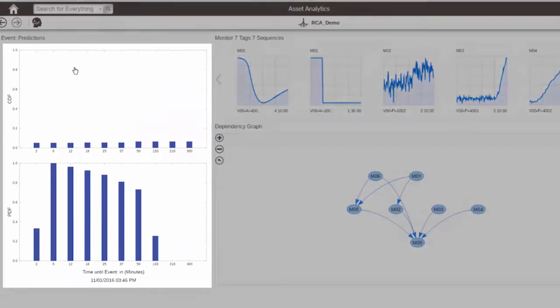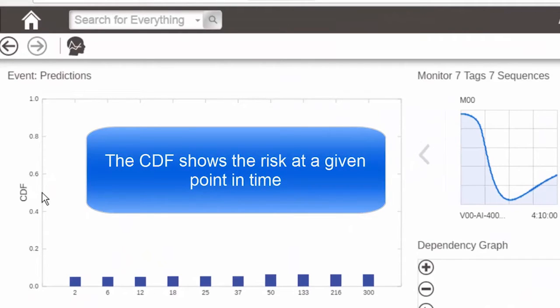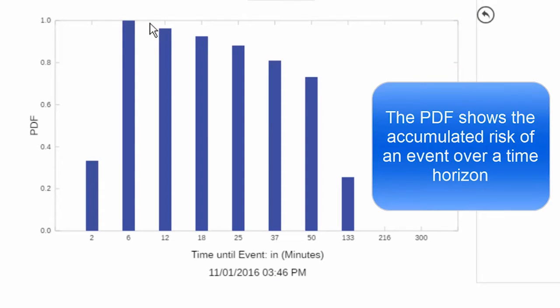This is a view of the runtime information. On the left are two plots used to show the probabilities of an event. The CDF is a direct measure of the current probability. The other view, the PDF, shows the accumulated probability. I can see how the probability has changed over time.